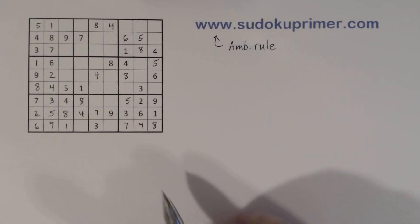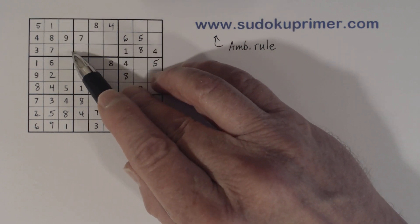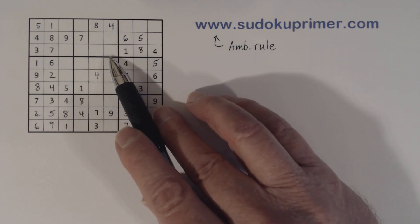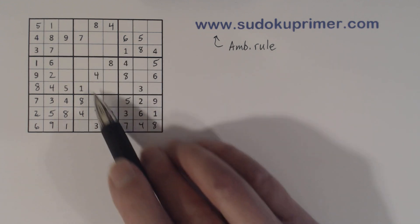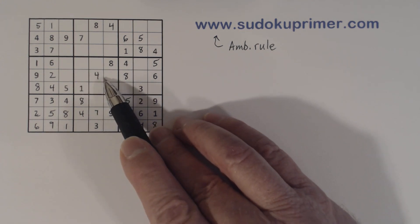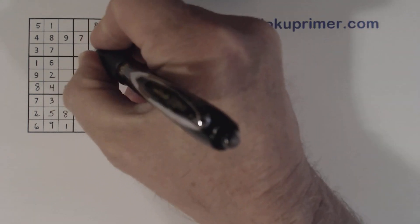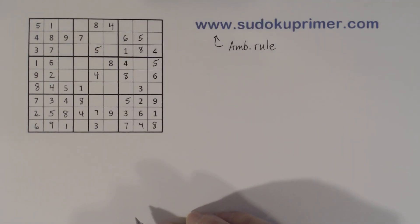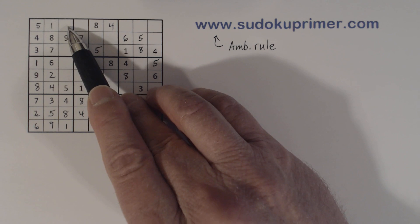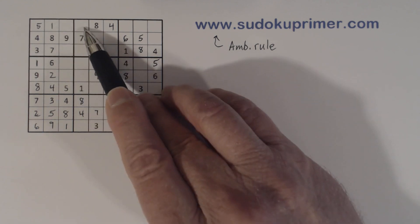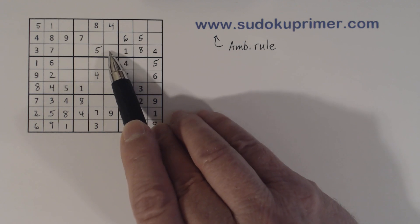Now we just have 2-6 twins left in this box. We've got a 5 that goes in one of these cells. If you remember our 2-5 twins here and our 5 constrained to one of these 2 cells here, using double column elimination we know these 2 cells are covered. So the 5 has to go there in box 2. Now we have 2-6 twins here and the 6 goes here or here, so we know the 2 can't go here or here — it's constrained to one of these 3 cells.